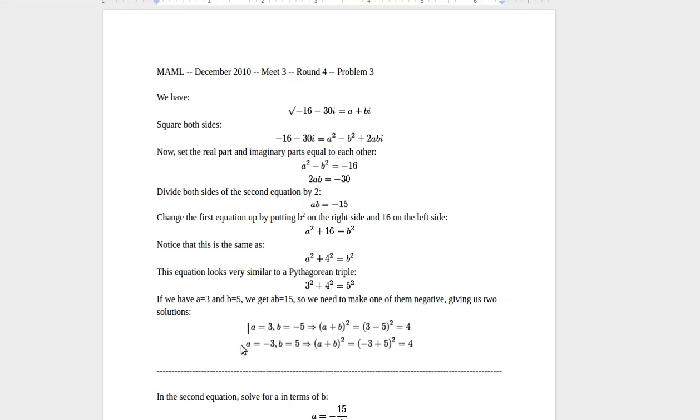And then if you make a negative, you get a equals negative 3 and b equals 5, so a plus b equals 2, and then you get 2 squared equals 4. So either way, our solution is 4.